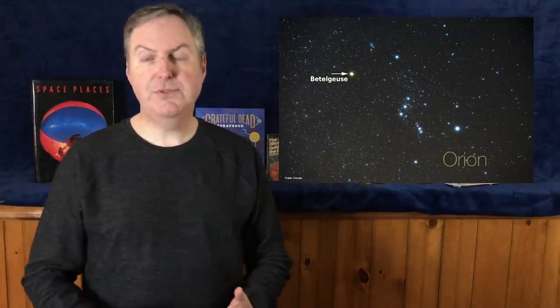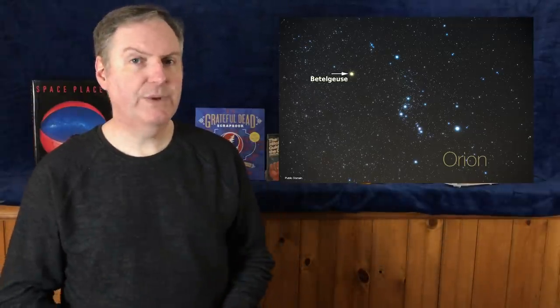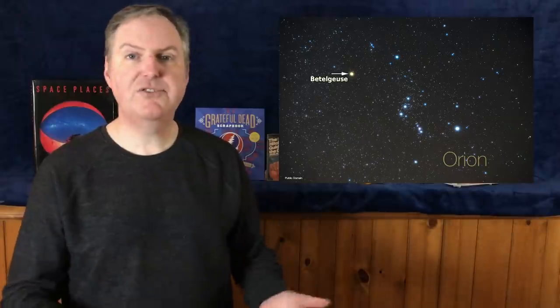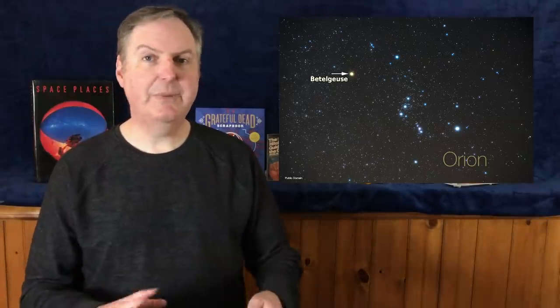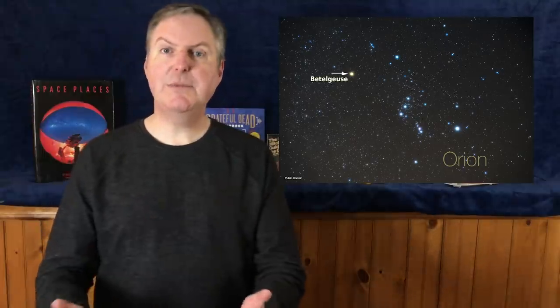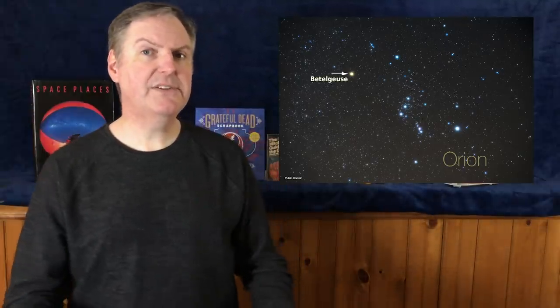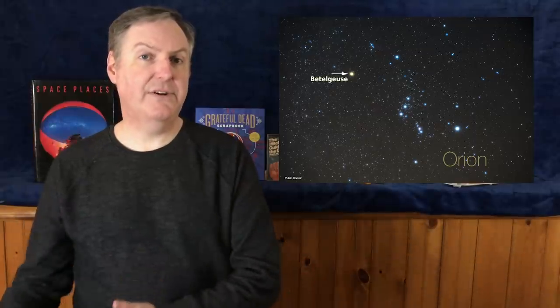Much of the work involving Betelgeuse has been based on directly measuring its brightness and seeing how it changes in comparison to nearby non-variable stars. This is a technique called photometry and nowadays it can be done by anyone with a telescope and the right camera and software.